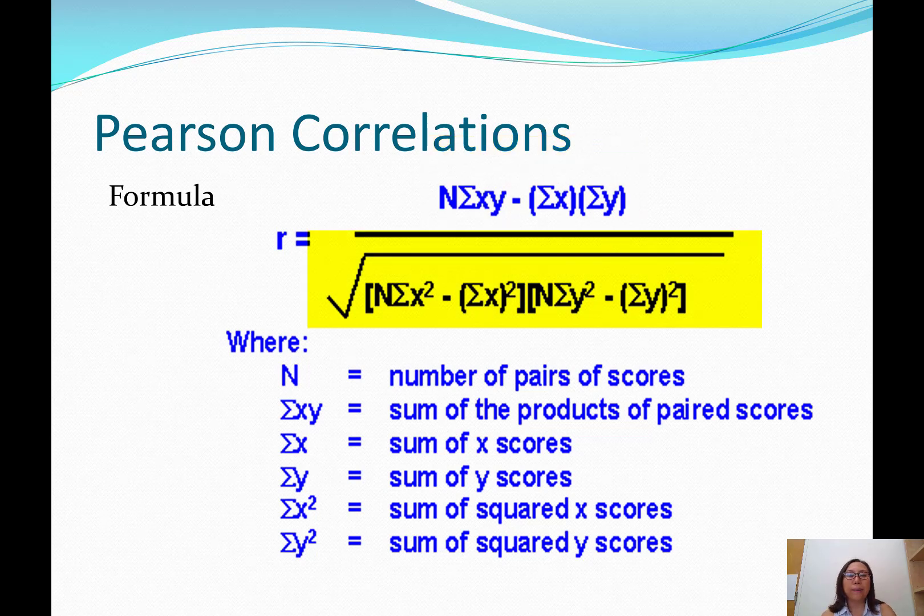In the denominator, you have a square root sign over all of this that's underneath. You can see there are two separate sets of brackets. In the first set, you see n, and then times the sum of x's squared. So we want to total all the squared x's minus the sum of x. That's the number used in the numerator, squared. Then the second set of brackets is identical to the first set, except it's about the y variables. So n times the sum of squared y's minus the sum of y. That's the same number that was used in the numerator, squared. You want to remember that all of this in the bottom is under a square root sign.